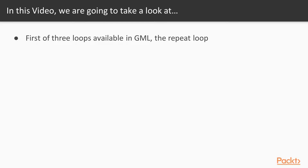In this video, we're going to look at the first of three loops available in GameMaker language: the repeat loop. This loop is super simple to understand and use. It literally just repeats the code we input a given number of times.